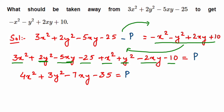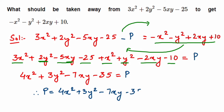Therefore P = 4x² + 3y² - 7xy - 35. This is the expression which should be taken away from 3x² + 2y² - 5xy - 25 to get -x² - y² + 2xy + 10. I hope it's clear how we solved this. If you have any other questions, drop a comment below. Thank you so much for watching.